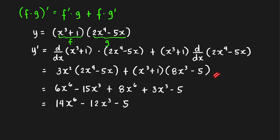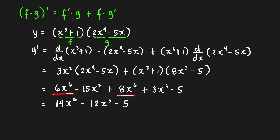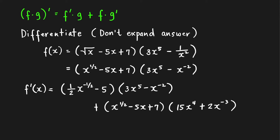The remaining part is only algebra. Apply the FOIL method and combine like terms. You'll get 14x⁶, and then negative 15 plus 3 gives −12x³, and then minus 5.